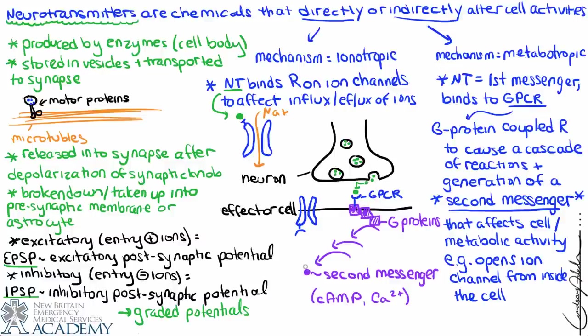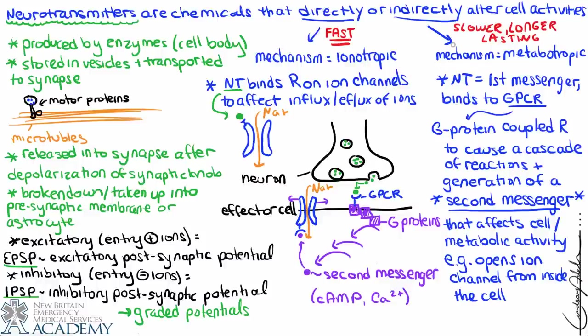The second messenger's activities can vary, but as an example, it can bind to an ion channel on the inside of the cell. The receptor faces the ICF rather than the ECF, and when the second messenger binds, it causes the channel to open. The ionotropic mechanism is very fast, but the metabotropic mechanism, although slower, is considered longer lasting. We'll see both mechanisms among the neurotransmitters we'll describe.